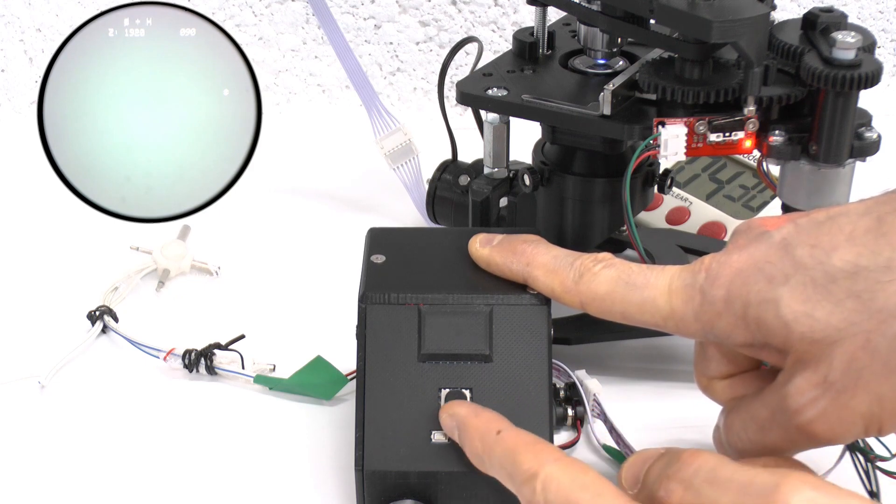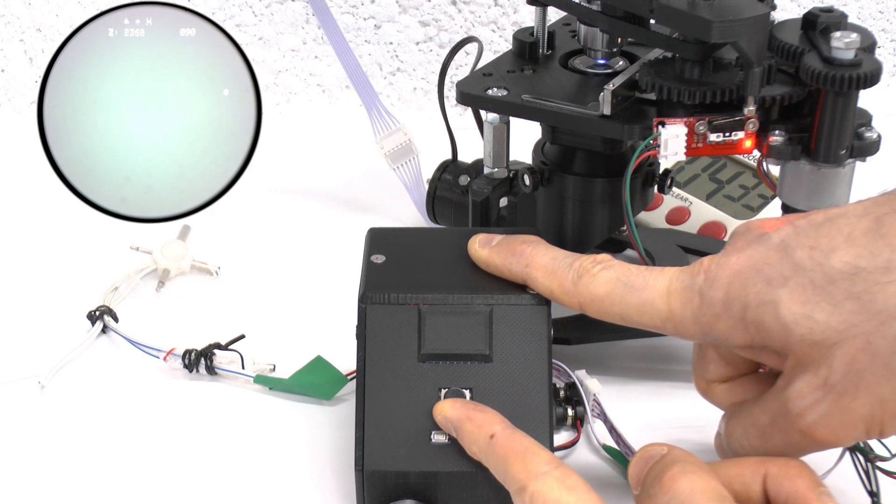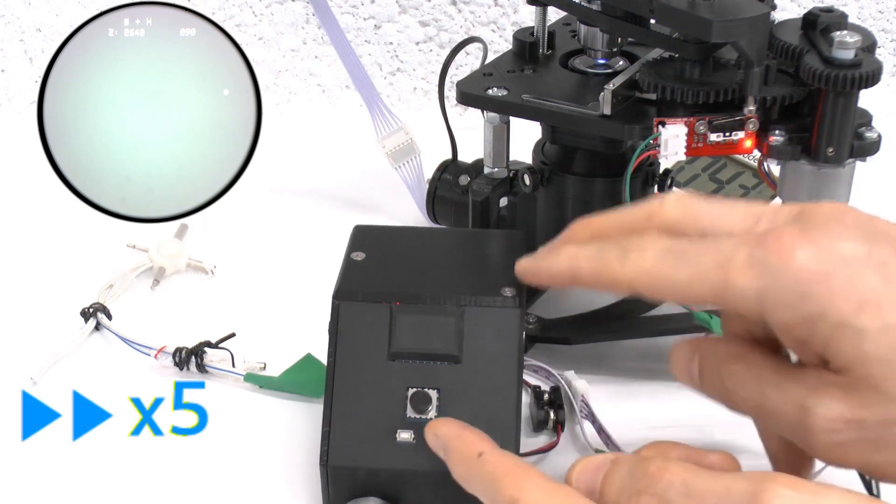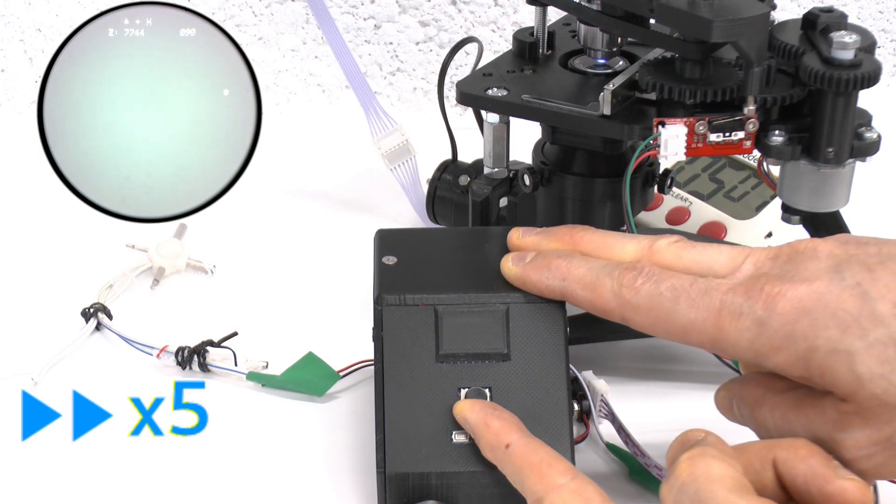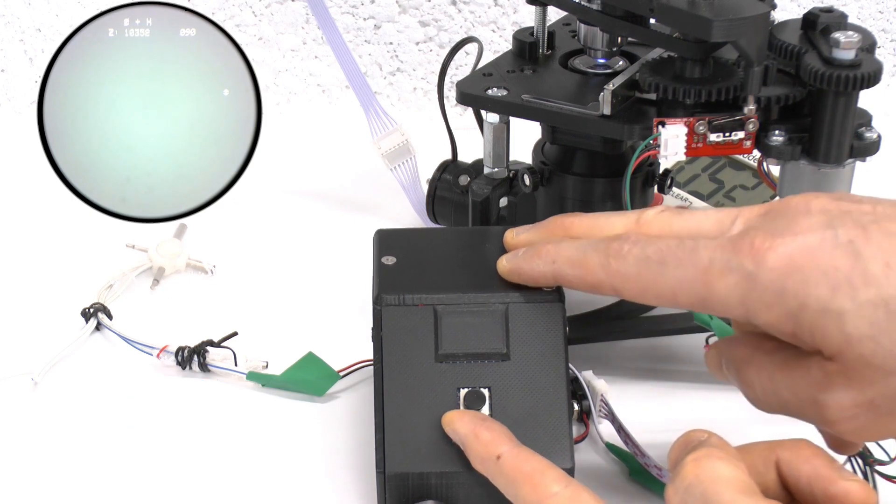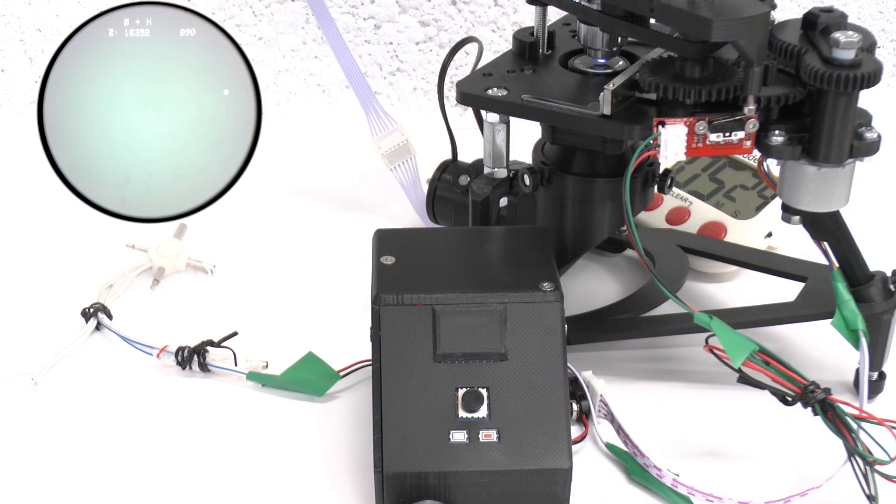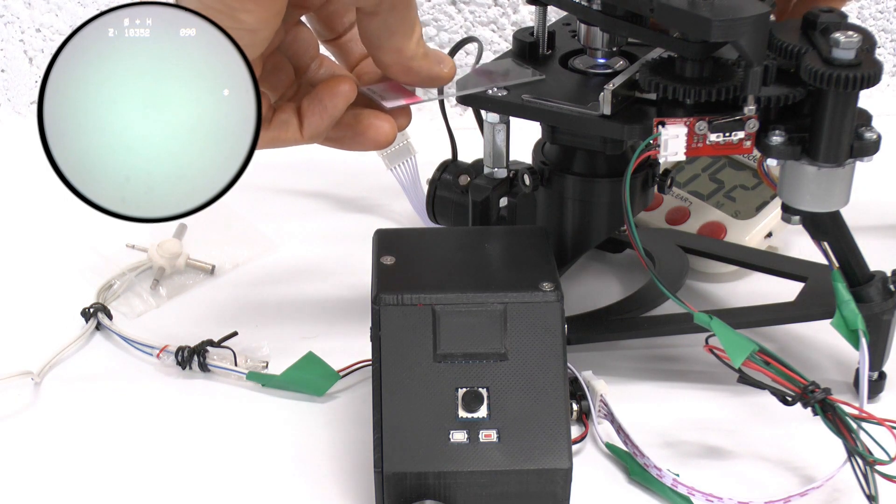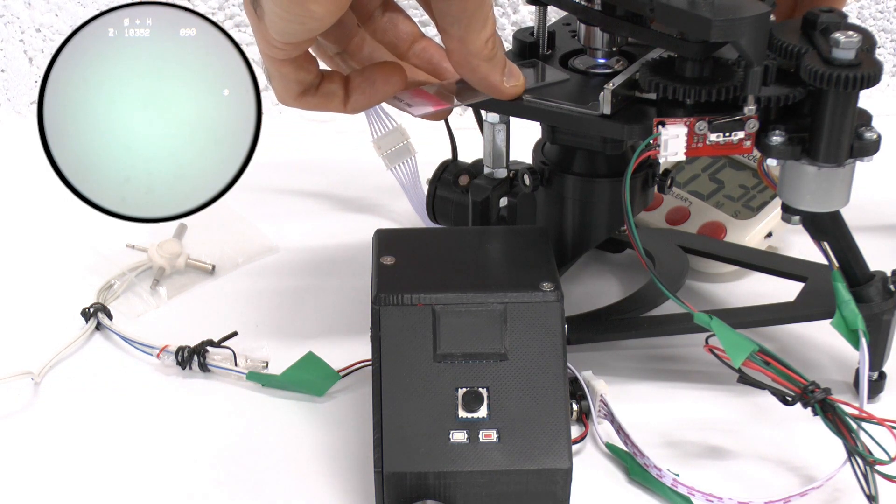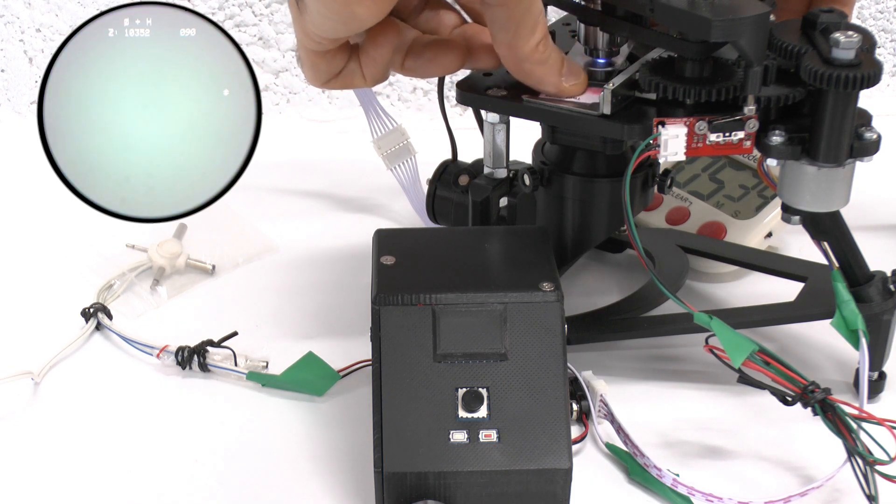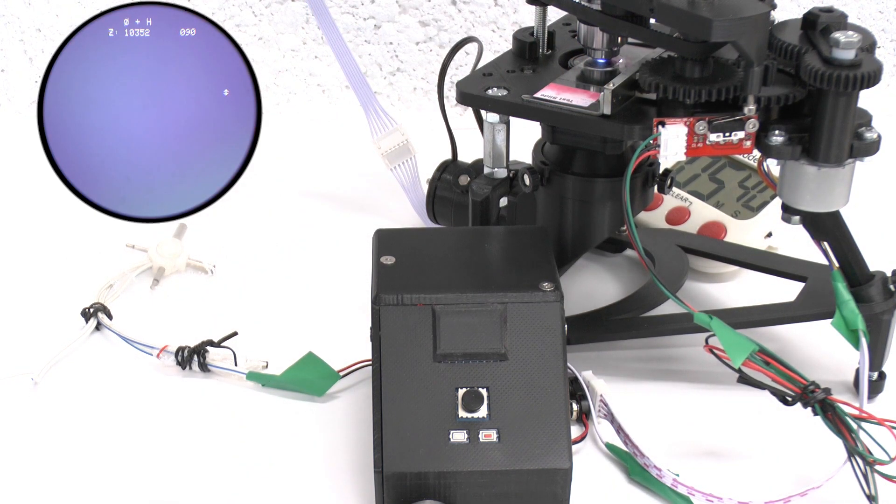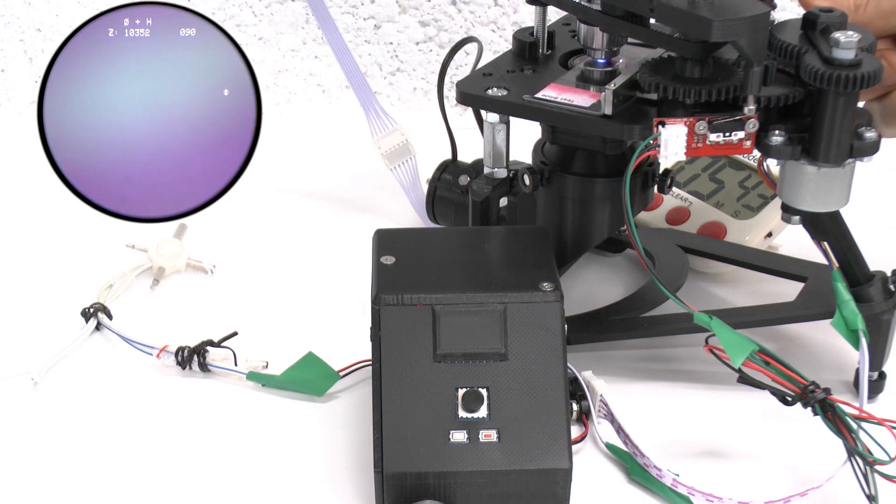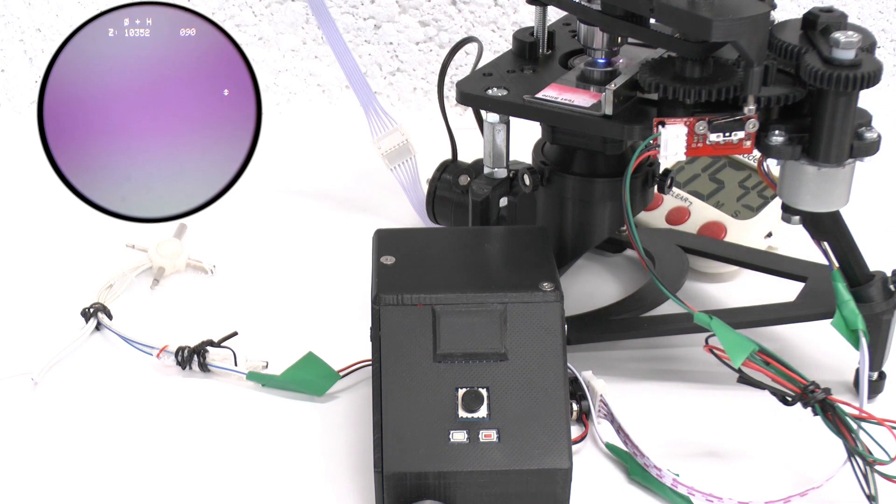When you think you've raised the stage enough, you can place a slide on the stage, taking care not to contact the objective with the slide. Now that you've got the slide on the stage, position it with some part of the specimen under the objective, and focus the microscope using either the up or down action of the joystick.